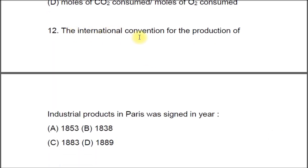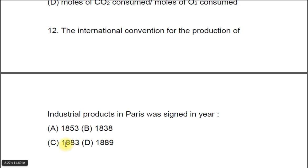Question 12: The International Convention for the Protection of Industrial Products in Paris was signed in year A) 1853, B) 1838, C) 1883, D) 1889. The correct answer is C, 1883.